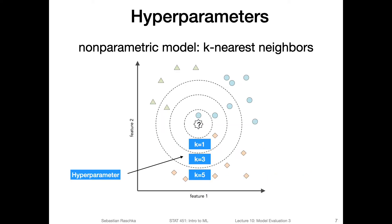To illustrate this a little bit better, let's take a look at our old friend the k-nearest neighbor classifier. The k-nearest neighbor classifier, by the way, is a non-parametric model. We talked about the difference between parametric and non-parametric models before, but just to recap: non-parametric models are models where we don't define the structure of the model a priori — it depends on the training set.